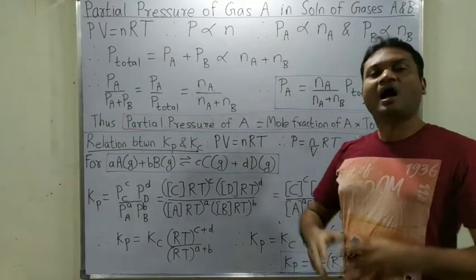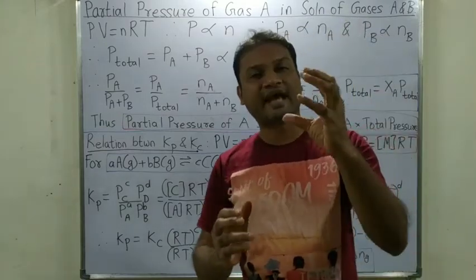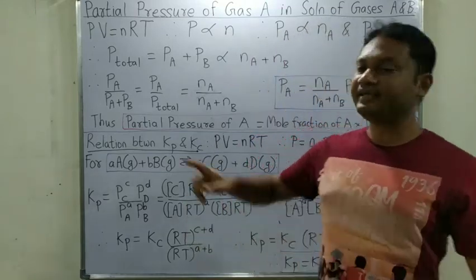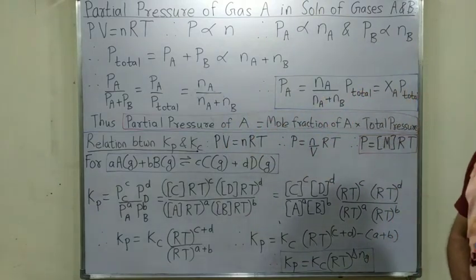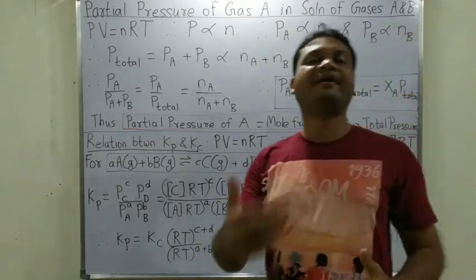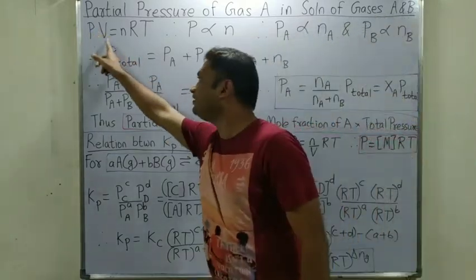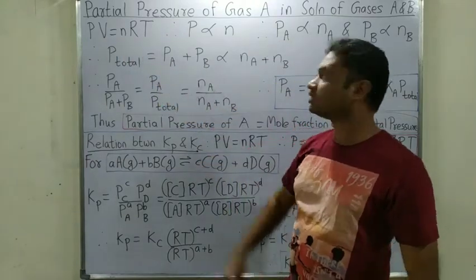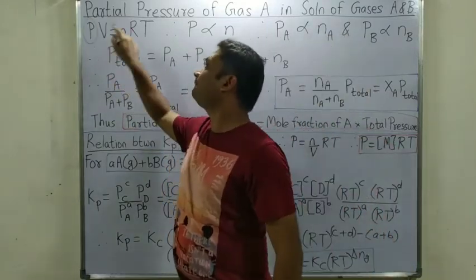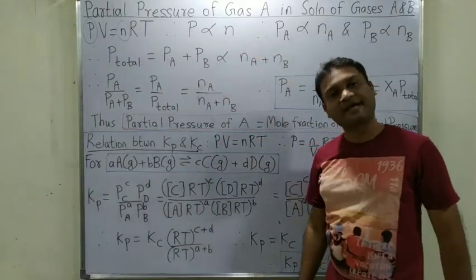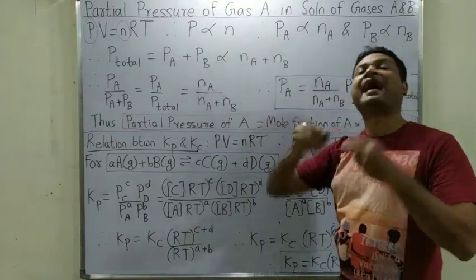We have a system of two gases. In a container we have gas A and gas B. From the ideal gas equation PV = nRT, pressure is directly proportional to number of moles. So if we write this equation for gas A, pressure of A is directly proportional to moles of A.